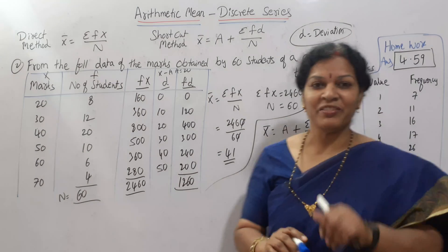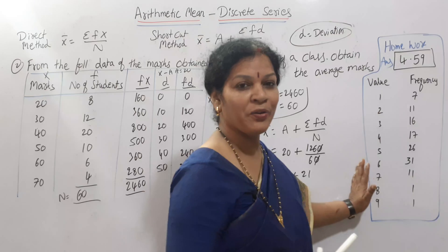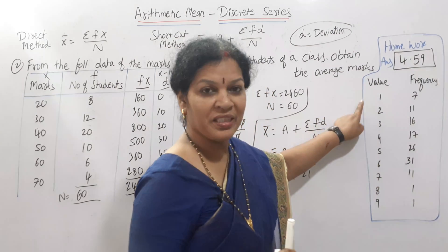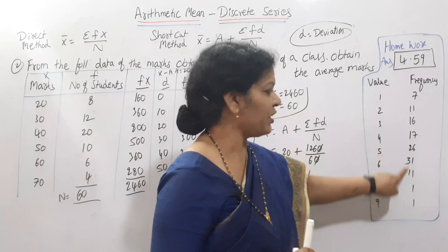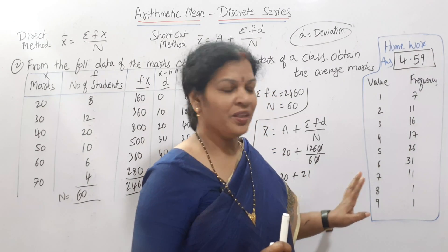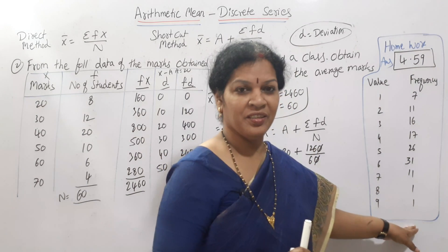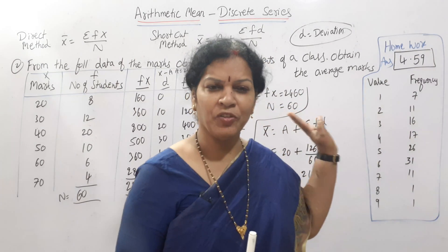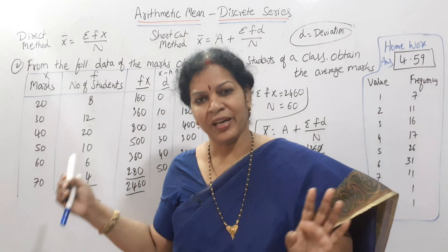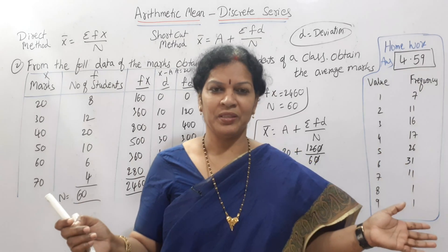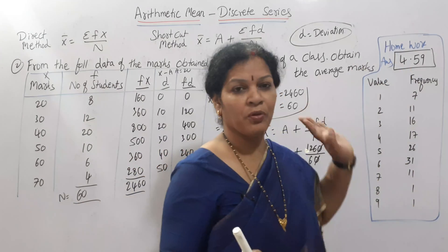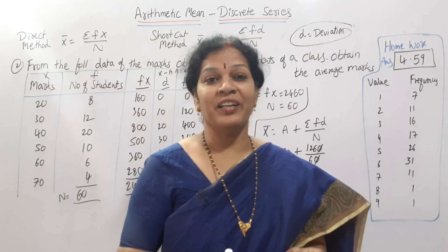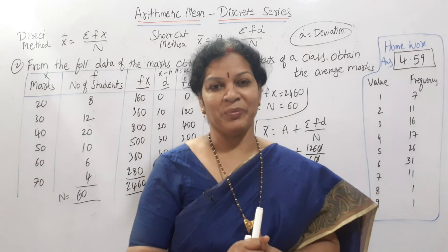Here is a homework problem for you. The value, which is X, and the frequency are given. Total up the frequency to get N, then apply the formula the same way. Work it out by both the direct method and the shortcut method. The answer should be 4.59. Work it out and let me know your answer in the comment box.